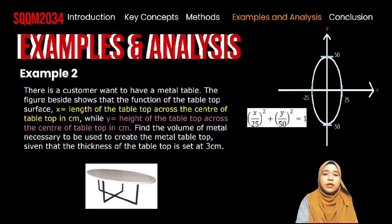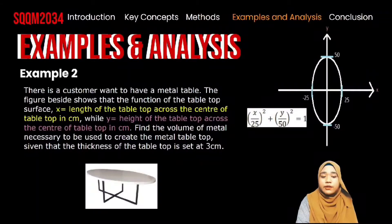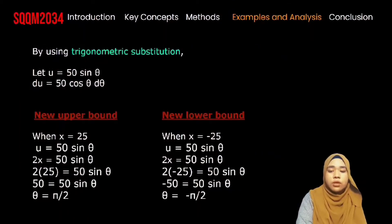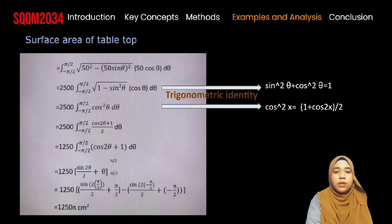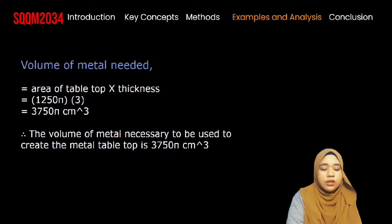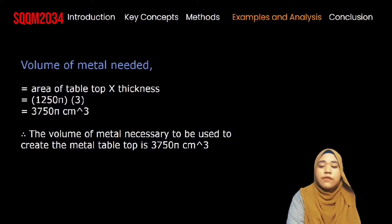For Example 2, a customer wants a metal table top. The figure shows that x equals the length of the table top and y equals the height. We need to find the volume of metal necessary to create the table top, given a thickness of 3 cm. To find the volume, we first find the surface area by integration. We convert the equation to y, then use u-substitution. We can see that it involves trigonometric substitution Case 1, which is a² − x². Using trigonometric substitution, we let u = √50 sin θ, so du = √50 cos θ dθ. We obtain a new lower bound and upper bound. We integrate using those bounds to find the surface area, applying the appropriate trigonometric identity. The surface area of the table top is 1,255 cm². To find the volume, we multiply the surface area by the given thickness. The answer is 3,755 cm³.